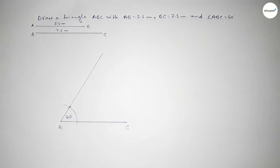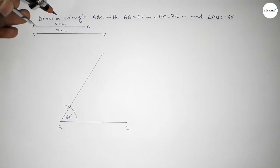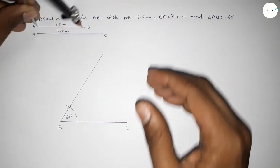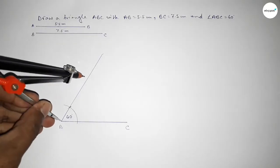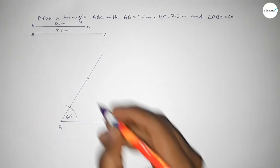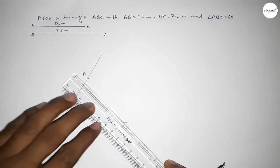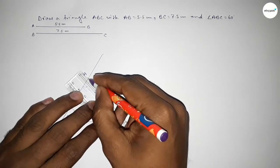Now taking the length 5.5 centimeters AB by using compass by this way, and putting the compass on the point B and cut here. So taking here point A. Now joining A and C to get the triangle ABC.